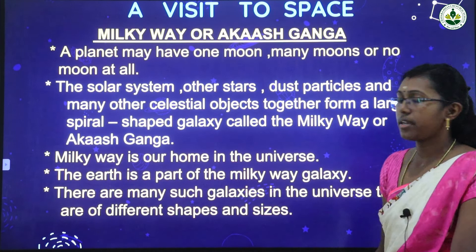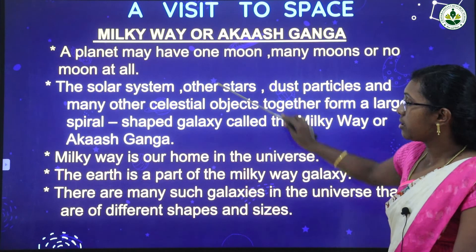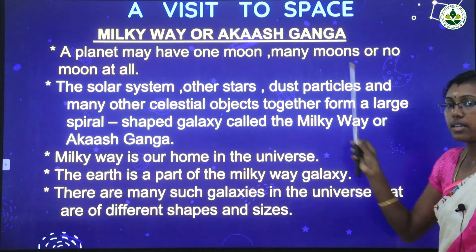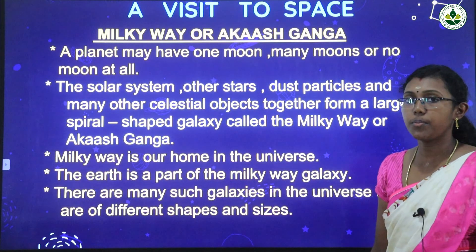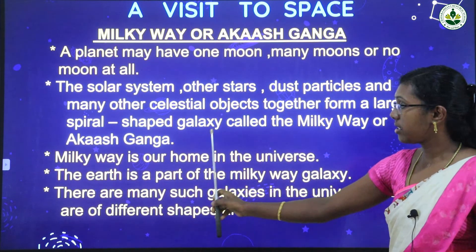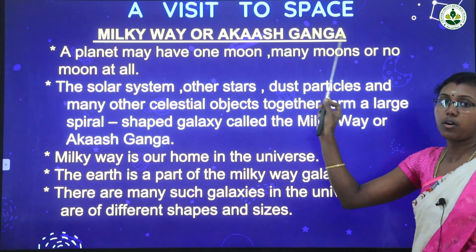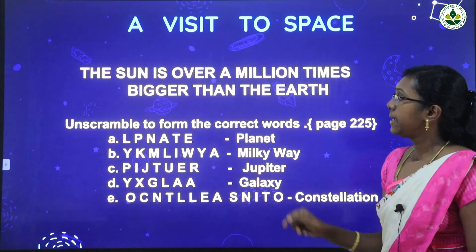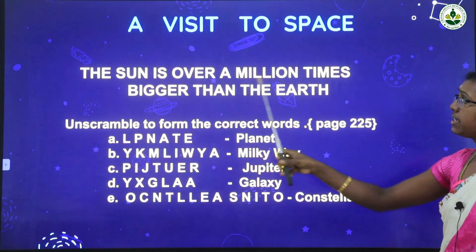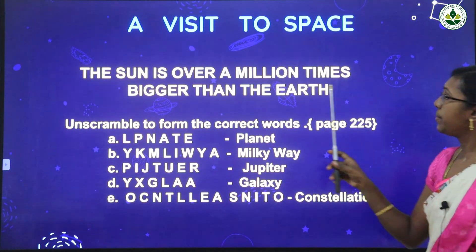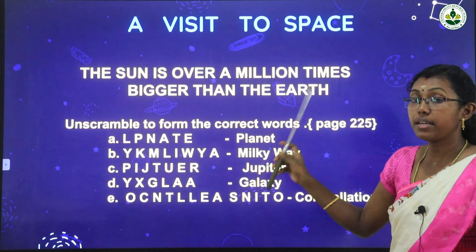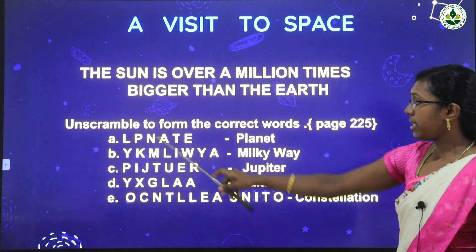The solar system, stars, dust particles, and other celestial bodies create a spiral-shaped galaxy known as Akash Ganga or Milky Way — that is very important. The sun is over a million times bigger than the Earth.